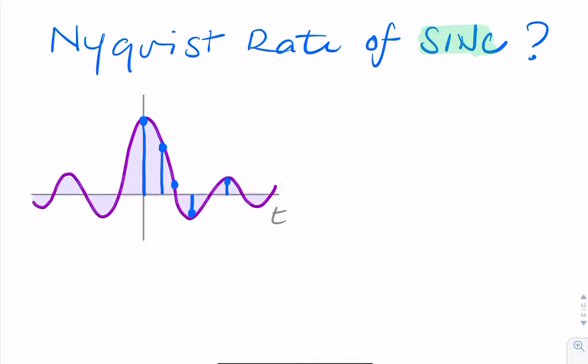What we're after is the sample rate, the minimum sample rate. To find the minimum sample rate, we would need to know the bandwidth. So what's the bandwidth of a SYNC function?